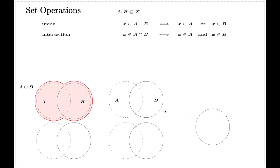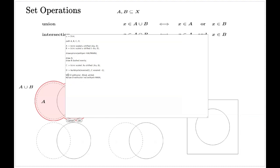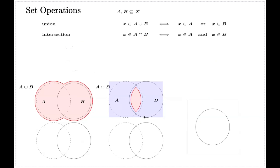Similarly, if the dashed circle represents all points of the set A and the solid circle represents all points of the set B, the intersection of the two will be the common area between the two sets, which I'll shade in pink.